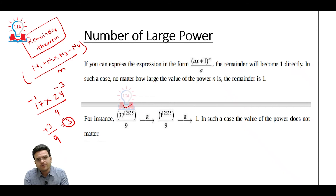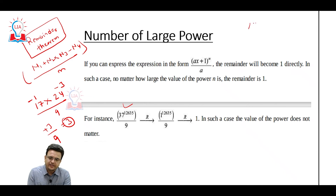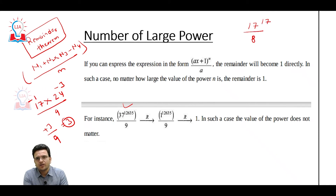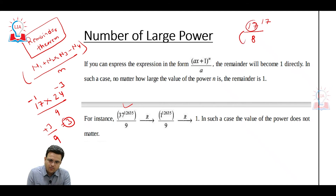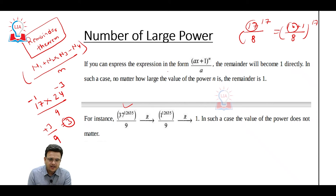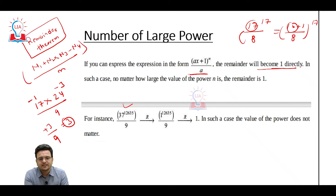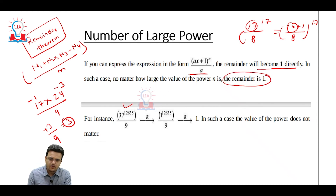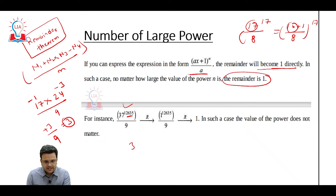Another important dimension: whenever questions are written in power format, how do we solve them? Whenever any number is written like 17 to the power 17 divided by 8, we try to write this number as a multiple of 8 plus something. We can write (16 + 1) to the power 17 divided by 8. Since 16 is divisible by 8, this gives remainder 0 + 1 to the power 17 = 1. So if you can express it as (multiple of M + 1), the remainder will be 1 directly, no matter how large the power.